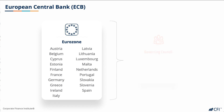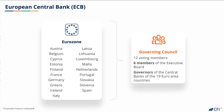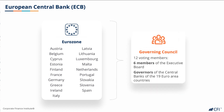The main decision-making body is the Governing Council, which consists of the six members of the executive board of the ECB, plus the governors of the central banks of the 19 euro area countries voting on a rotating basis. The Governing Council meets frequently, but monetary policy decisions are made only at meetings every six weeks.